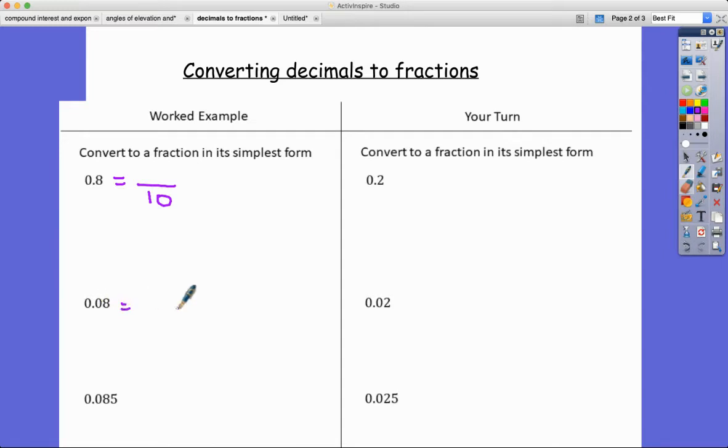On this one there's two decimal places and therefore there's going to be two zeros in my denominator to make it a hundred. And then in this one, you guessed it, there's three decimal places and so it's going to be one thousand.